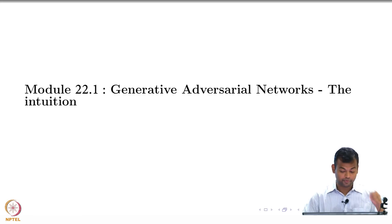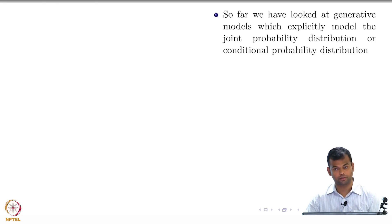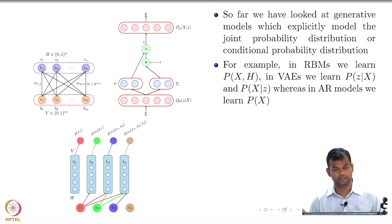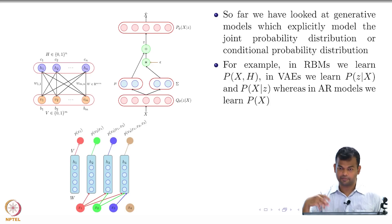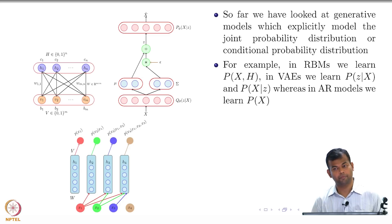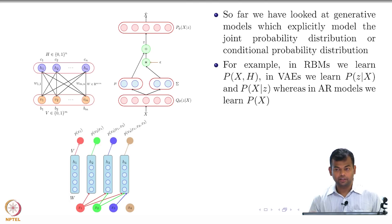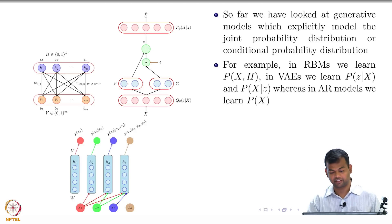So far we have looked at generative models which explicitly model the joint distribution or the conditional probability distribution. For example, in the case of RBMs we learn P(X, H). In the case of VAEs we learn P(Z|X) and P(X|Z), and in the case of autoregressive models we learn P(X) without any latent variables. We were explicitly learning these probability distributions, and everything else was on top of it — whether abstraction, sampling from P(Z|X), or generation via P(X|Z). Both abstraction and generation were happening based on these explicitly computed probability distributions, each with their own way of dealing with it using sampling, variational inference, or neural networks to parameterize the explicit factorization.